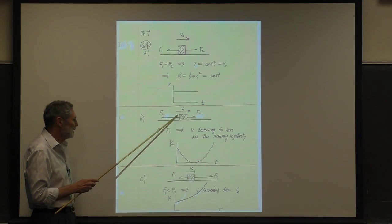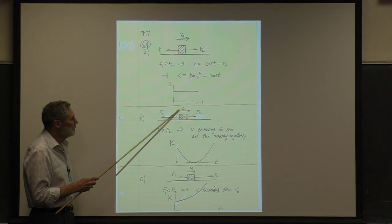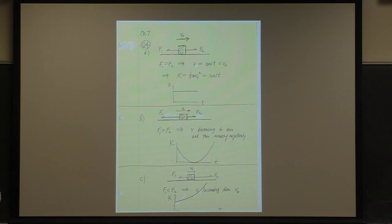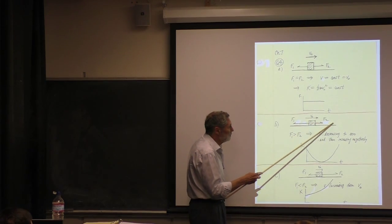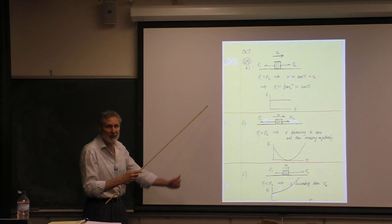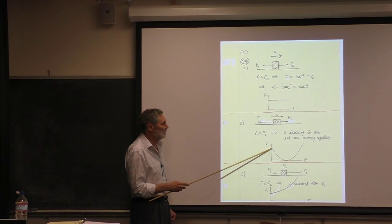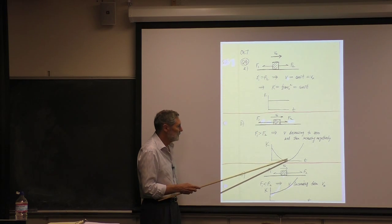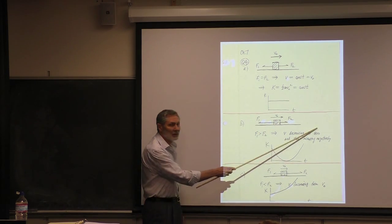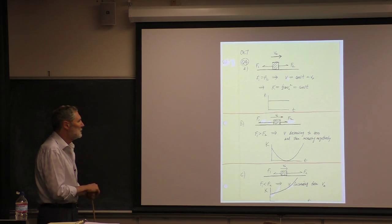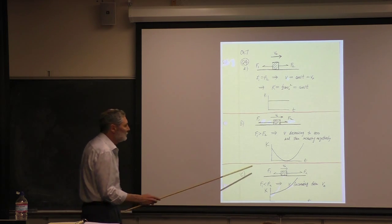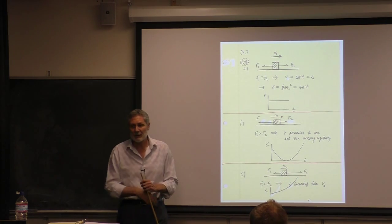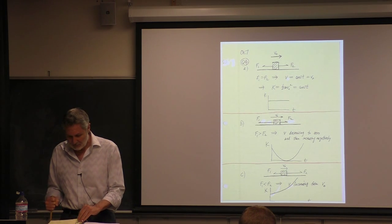For the second situation, the net force is impeding the motion so it slows down. Eventually the block momentarily comes to rest and then starts speeding up in the opposite direction. The kinetic energy starts at some value, drops to zero — it bottoms out because KE doesn't depend on sign — and then takes off again.